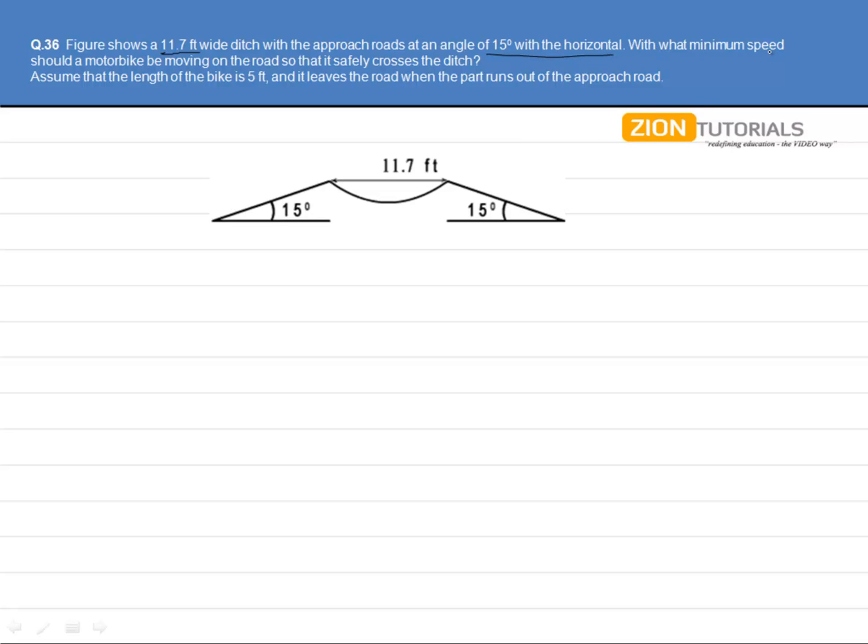With what minimum speed should a motorbike be moving on the road so that it safely crosses the ditch? Assume that the length of the bike is 5 feet and it leaves the road when the part runs out of the approach road.